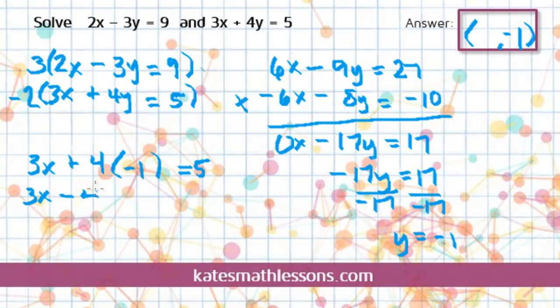4 times negative 1 is minus 4. I can undo subtracting 4 by adding 4 to both sides. So that gives me 3x equals 9. Divide both sides by 3. That gives me x equals 3. So I have just found the second part of my answer.